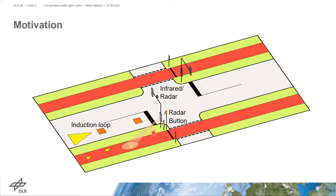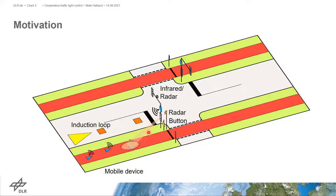With V2I, it is now possible to detect the cyclist at any position at the intersection with additional information. We decided on a mobile device — this might be a smartphone, smartwatch, or on-board computer of a bicycle with an app implementation. Today it is common that everybody has a mobile device in their pocket, so it might not be a big challenge to establish this kind of control at the intersection.